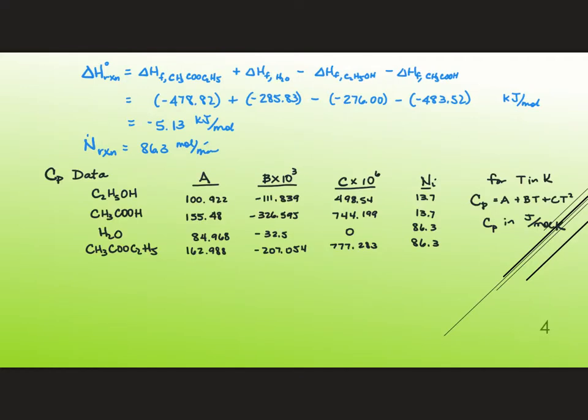The data that I found is for C sub p in joules per mole per kelvin. Temperature in kelvin and C sub p is the form a plus bt plus ct squared.